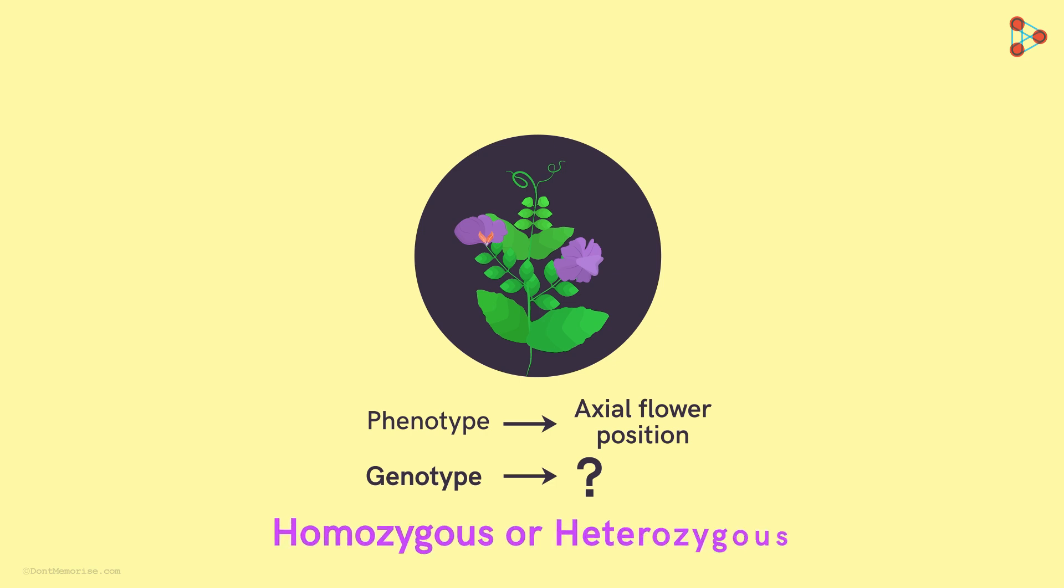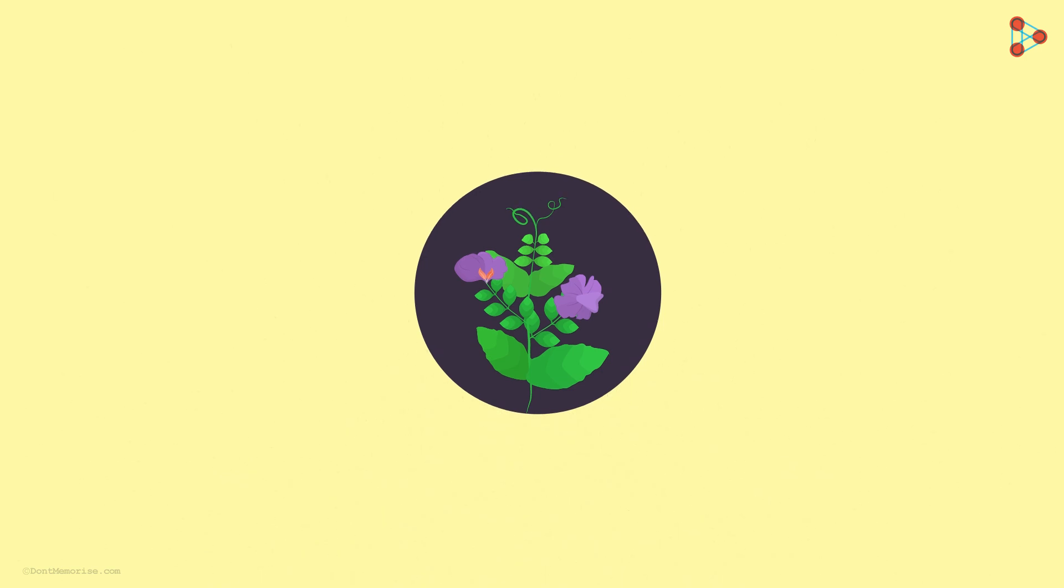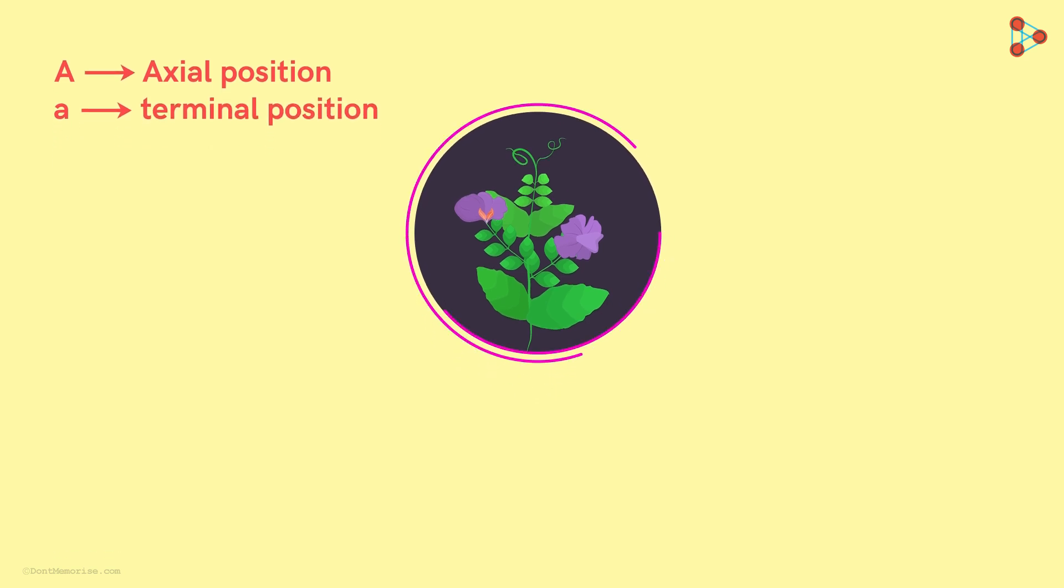Is it homozygous or heterozygous for this character? Let me simplify this for you. Let's consider the alleles A in capital to represent the dominant trait axial position and a in lower case for the recessive trait terminal position. So can you tell me whether this plant has the genotype AA or Aa?